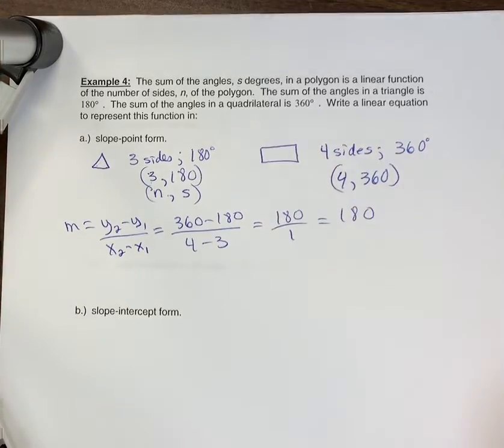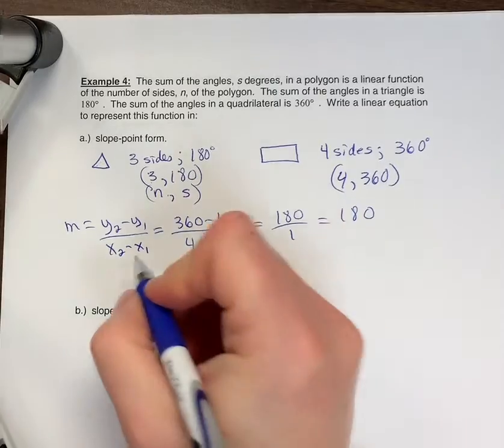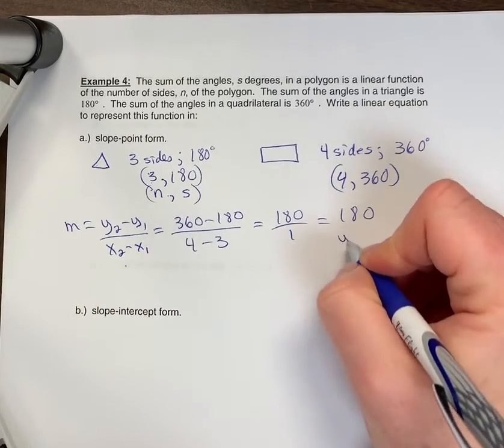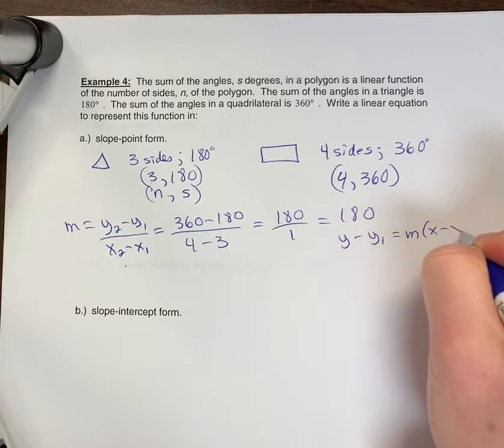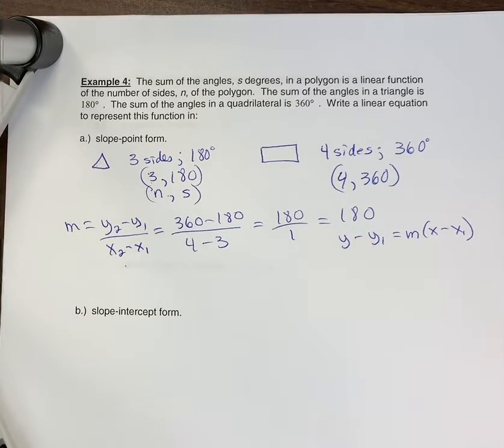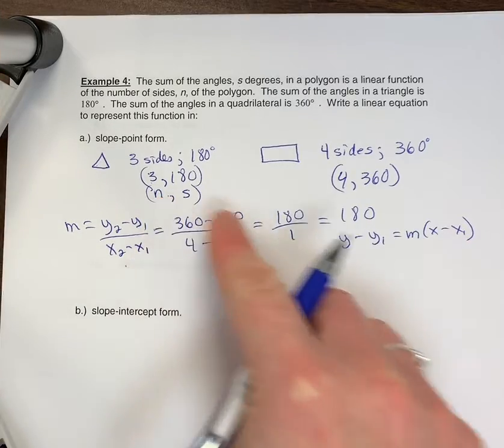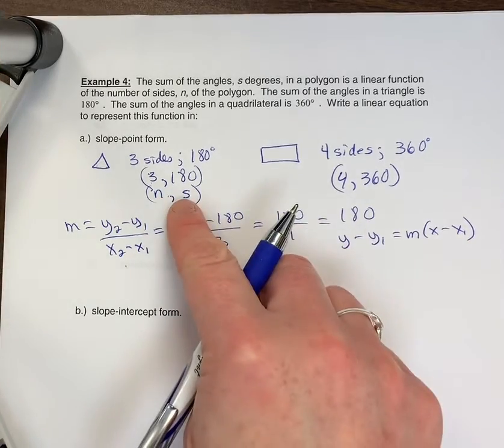So 360 minus 180 is 180 over 1, so 180 is the M value. So for slope-point form, remember that we have Y minus Y1 is equal to M times X minus X1. Now, the only difference is instead of X, we're going to write an N, and instead of Y, we're going to use S.